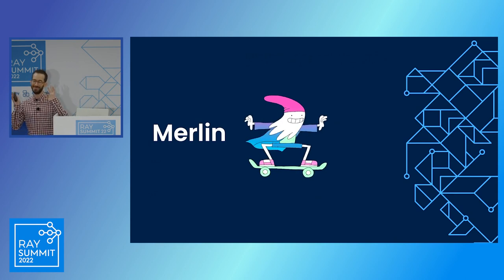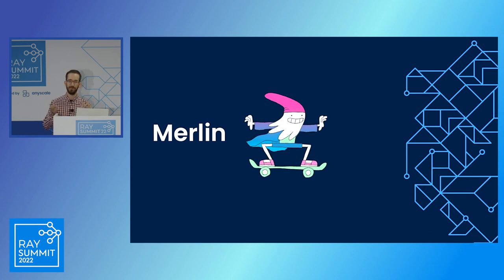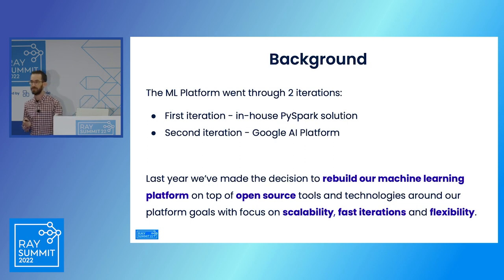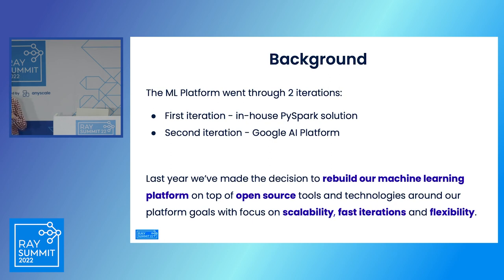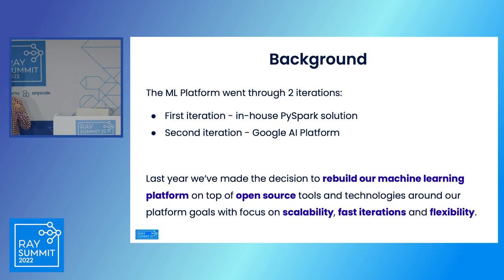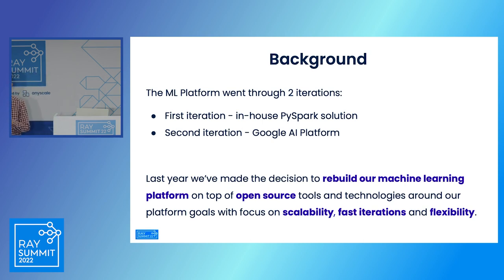Let's dive more deeply into Merlin and how it was built and being used at Shopify. As a background, the ML platform went through two iterations in the past. The first was built on top of an in-house PySpark system. The second was built as a wrapper around the Google AI Platform, which is now called Vertex AI, and it runs as a managed service on GCP.